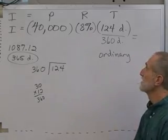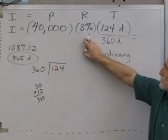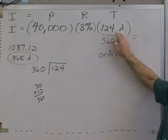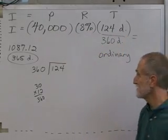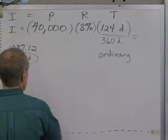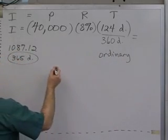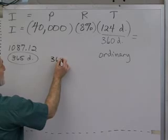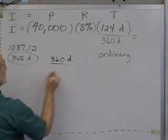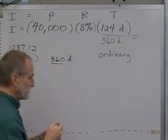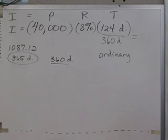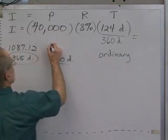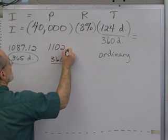Let's see how much more. Let's punch in 40,000 times 8% times 124 divided by 360, and that will tell us how much interest is going to be owed ordinary interest. It should be more than this $1,087.12 figure. 1,102.22.